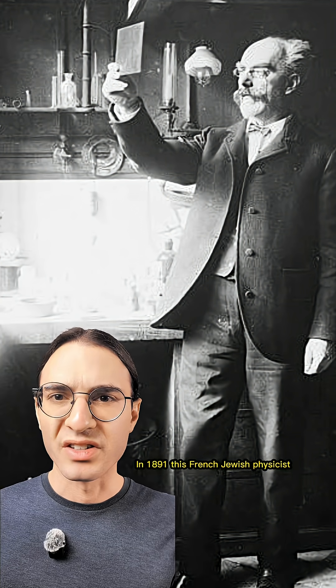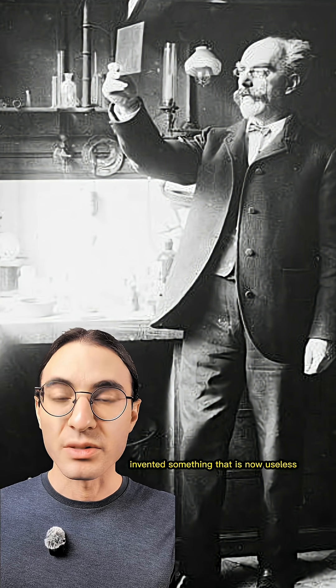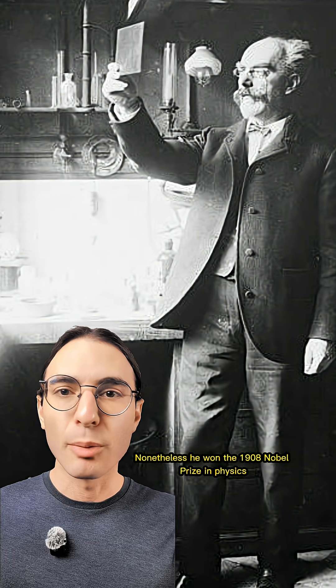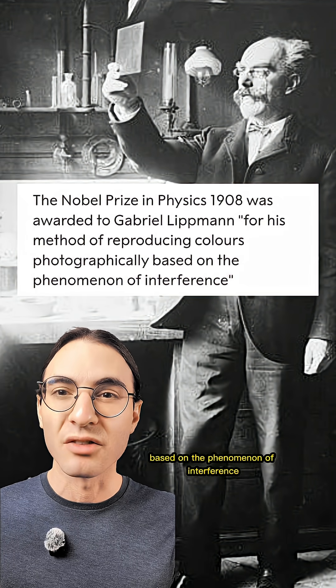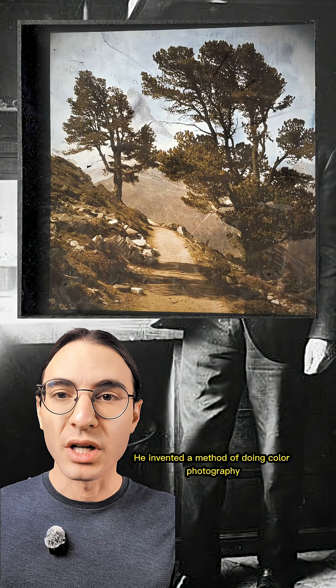In 1891, this French-Jewish physicist invented something that is now useless. Nonetheless, he won the 1908 Nobel Prize in Physics for his method of reproducing colors photographically based on the phenomenon of interference. You heard that right, he invented a method of doing color photography.